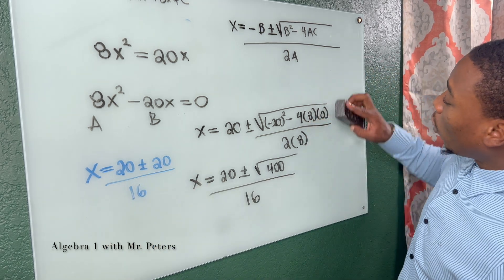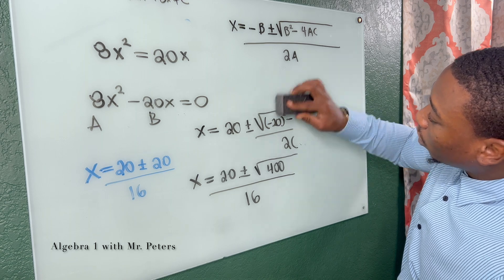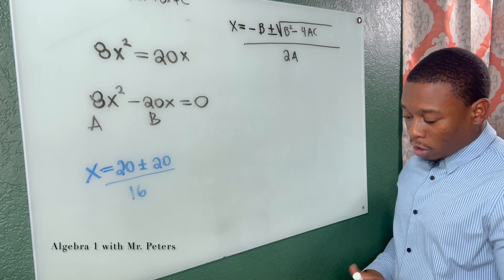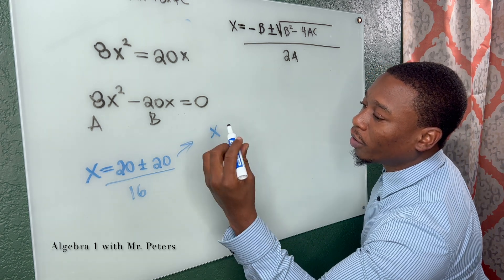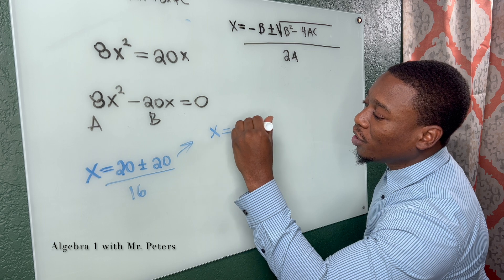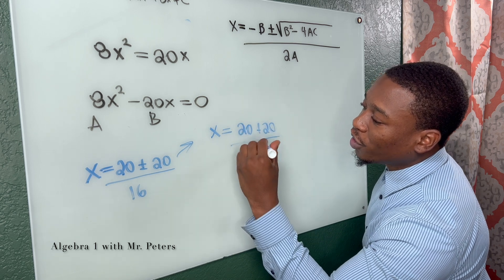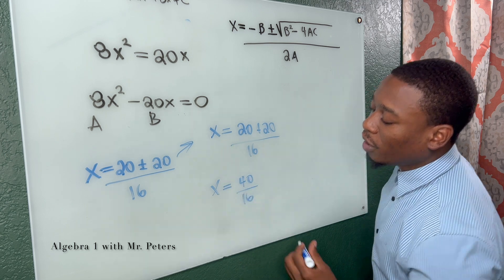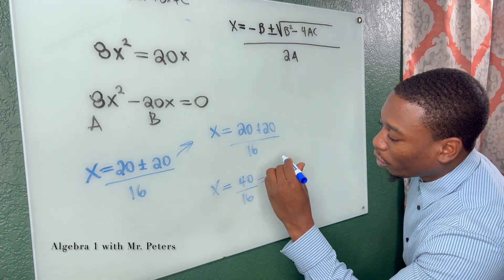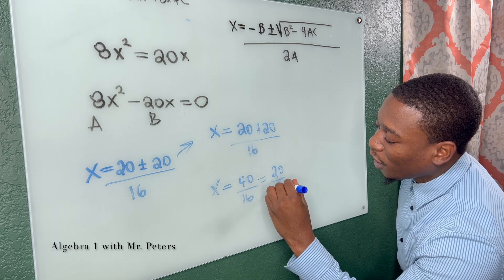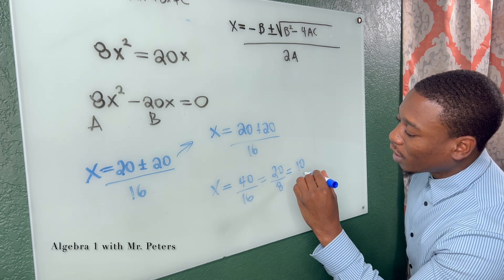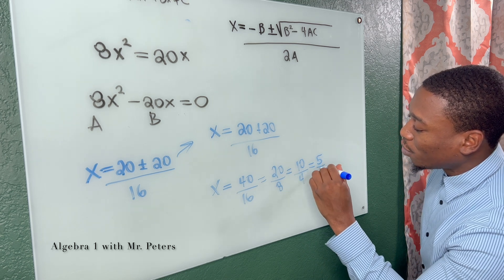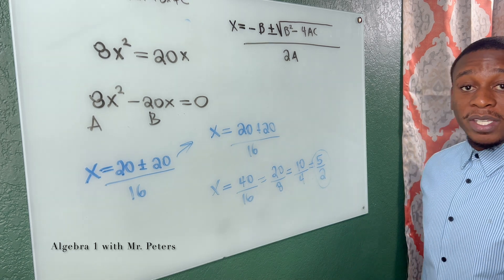So now we simplify this. So now my equation is going to be x is equal to 20 plus or minus 20 all over 16. So those are the two equations. And we're going to erase this just to get a little bit of space. If you guys need to look back at it, just rewind a bit. So here we go, two equations and then we're wrapping it on up. So x is equal to 20 plus 20 over 16. So x is equal to 40 over 16. If we divide this by two, we're going to get 20 over eight. If we divide by two again, we'll get 10 over four. If we divide by two again, we'll get five over two. So here goes our first answer, five over two.